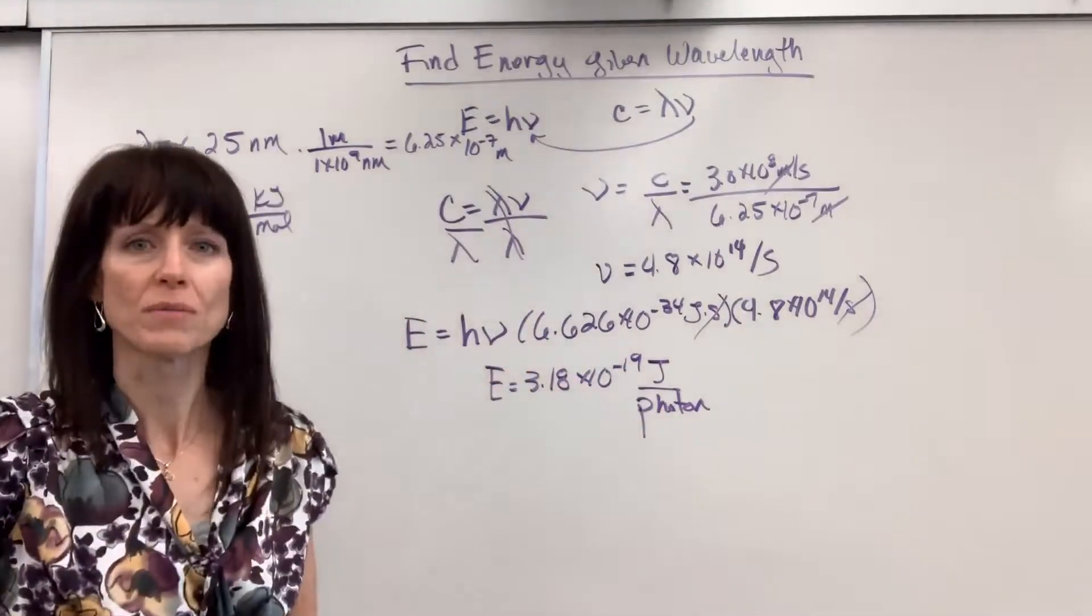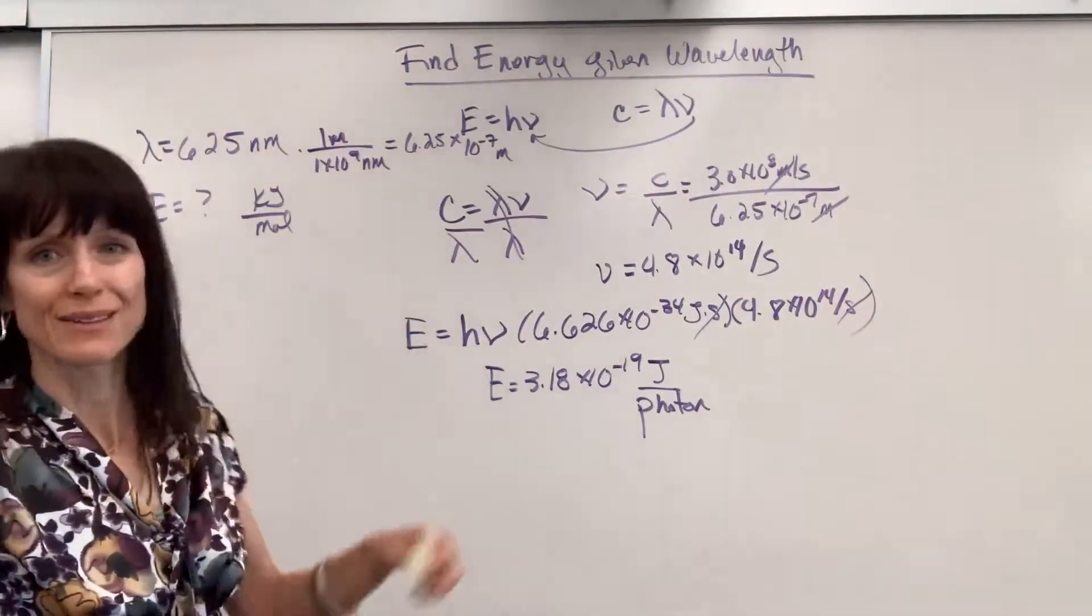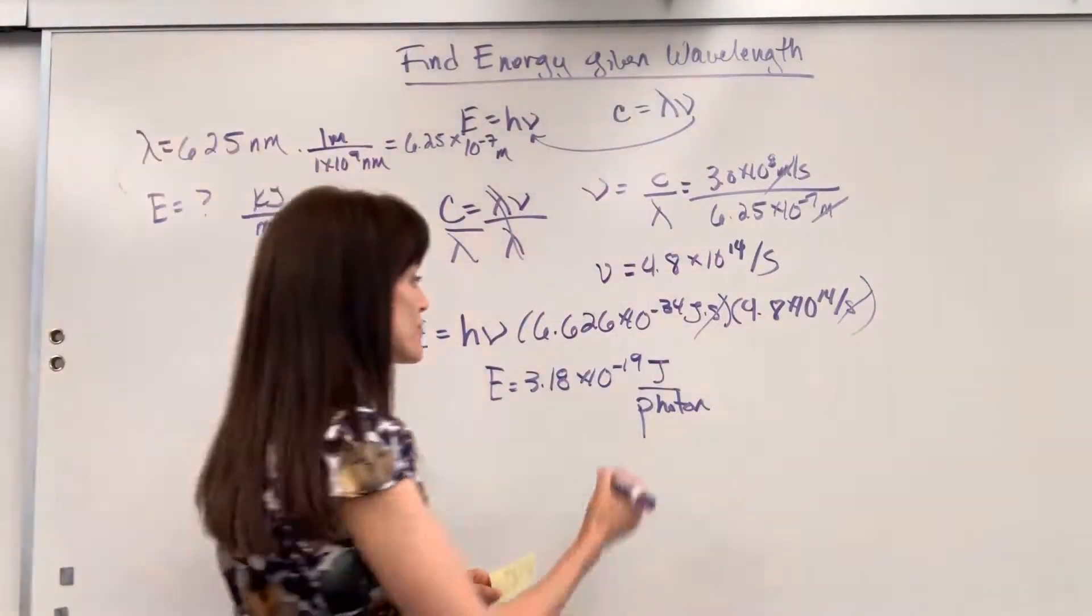Joules per photon. By definition, that formula, the energy for one photon. Well, they asked for kilojoules per mole. So let's go ahead and convert that.